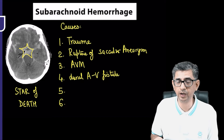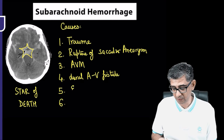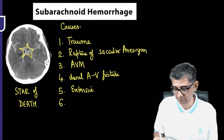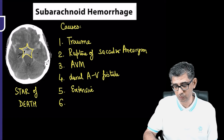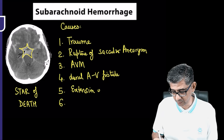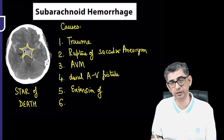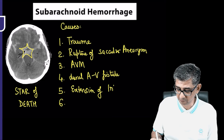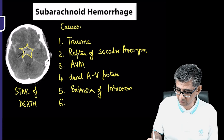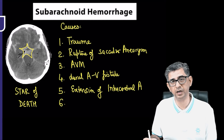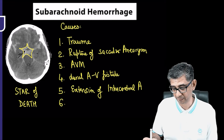For example, if a person is having a hypertensive crisis and develops an intracerebral bleed — which is covered in a separate video — there is a possibility that the bleed can extend, and the person can develop a subarachnoid hemorrhage as well.